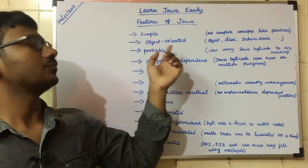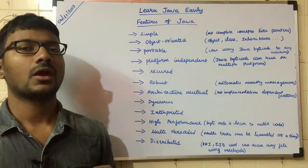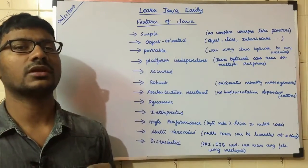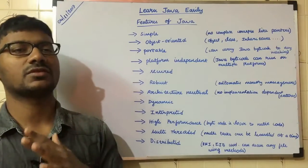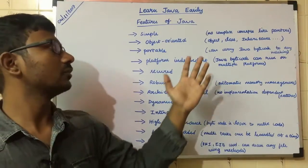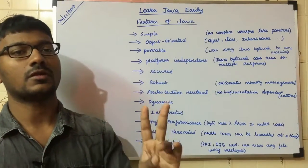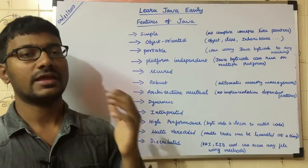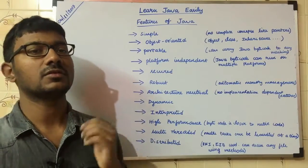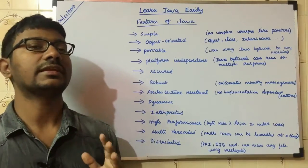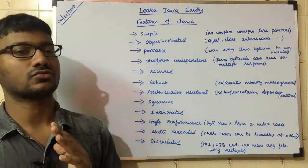Next is object-oriented. Object-oriented will be detailed in the next video. Object-oriented is supported in Java — inheritance, polymorphism, and more. The details will be covered in the next video.